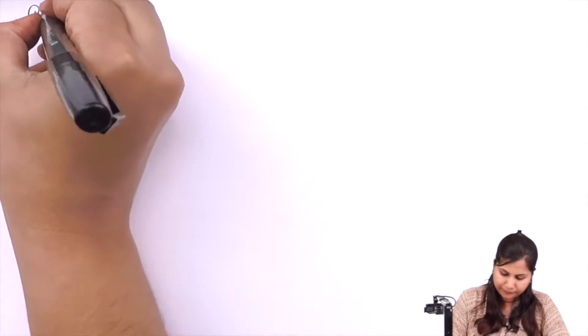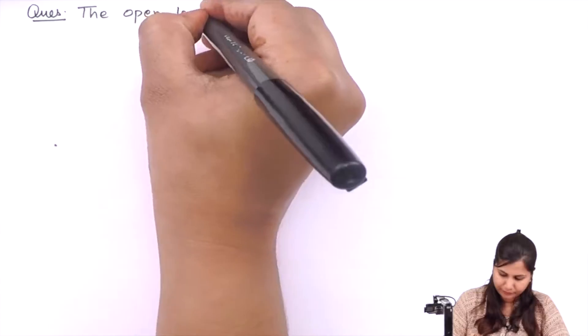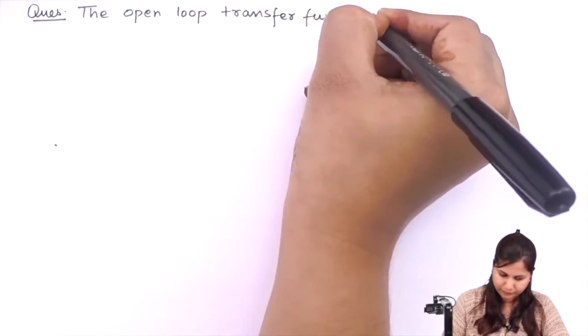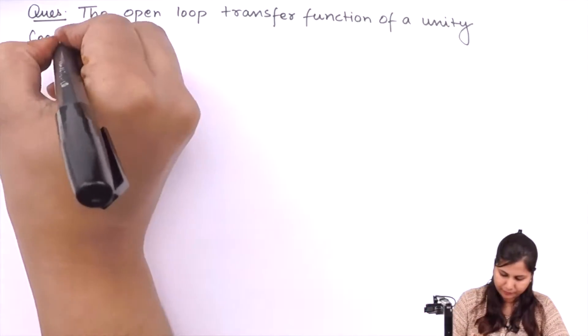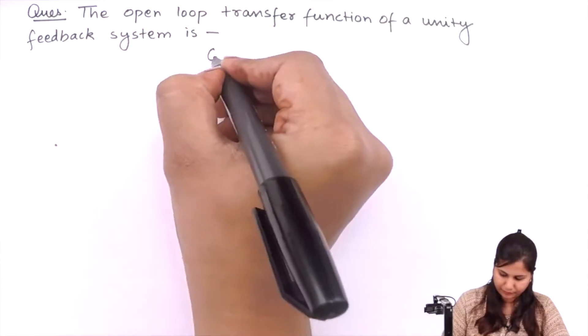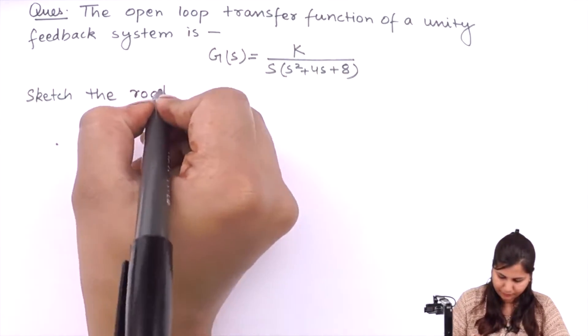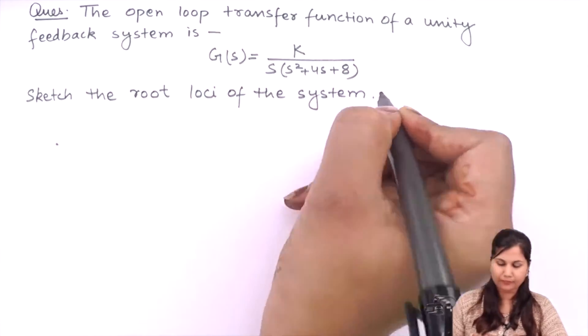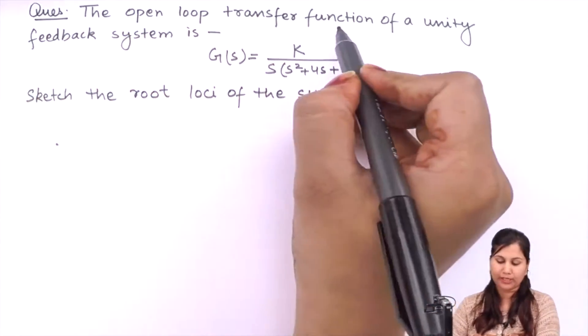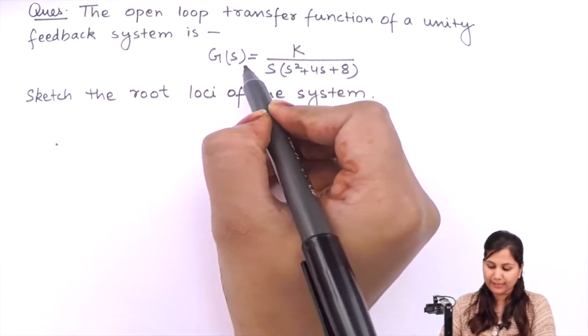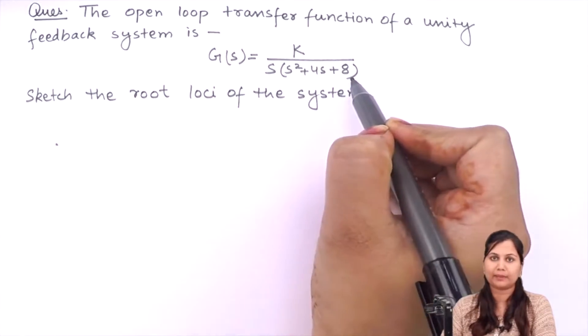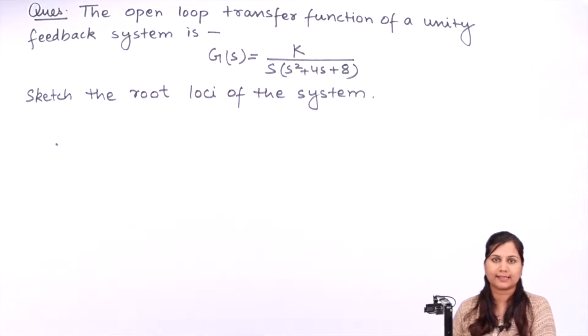Hello friends. In this video we are going to solve a problem on how to plot the root locus diagram of a system. We are given the open loop transfer function of a unity feedback system: G(s) = K / [s(s² + 4s + 8)], and we have to sketch the root loci of the system.